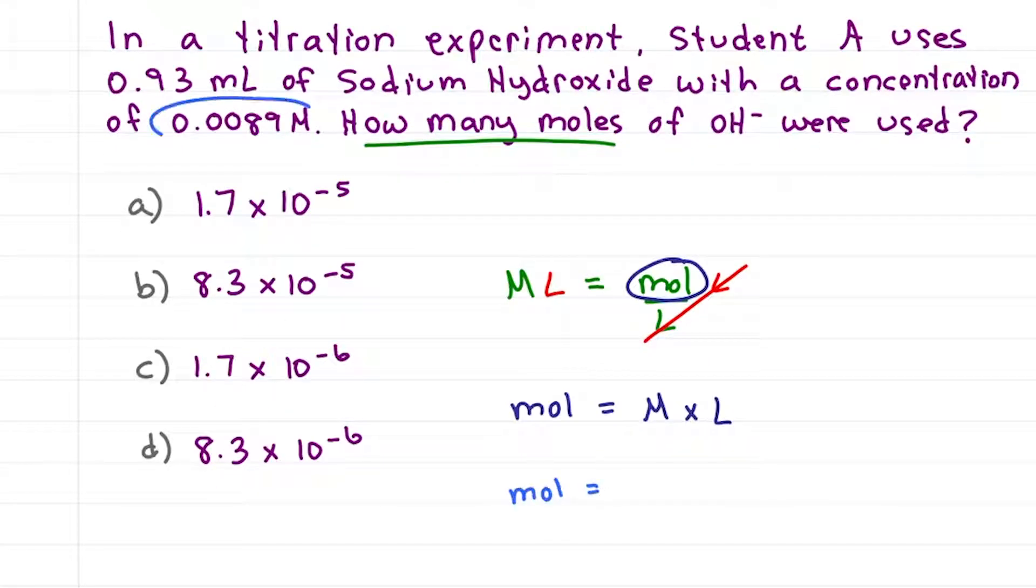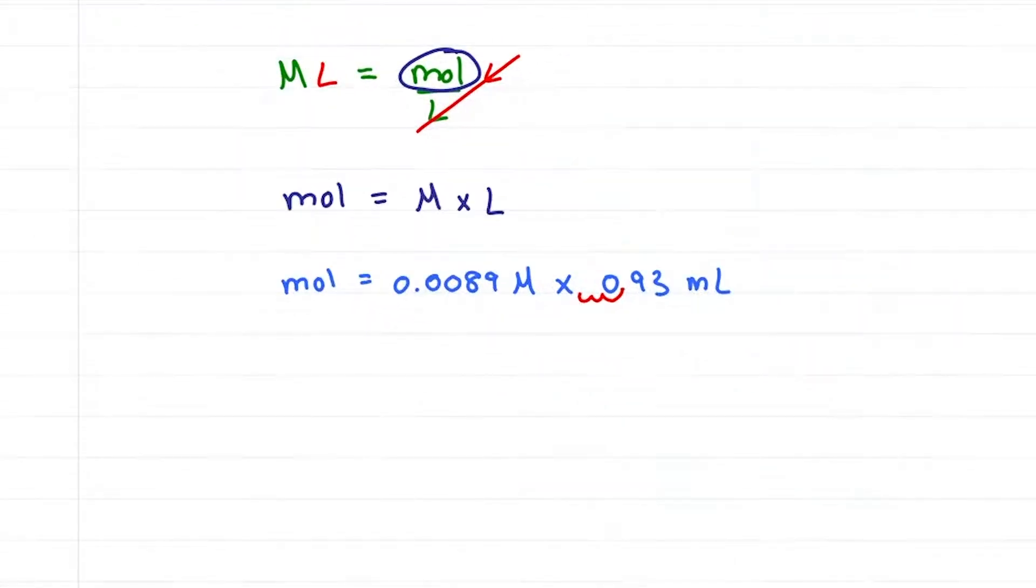That's moles equals 0.0089 molar times 0.93. Wait, that's milliliters, we need liters. So move the decimal back three spaces. For a math problem of 0.0089 times 0.00093. That's a lot. First, let's round. Isn't that so much easier?